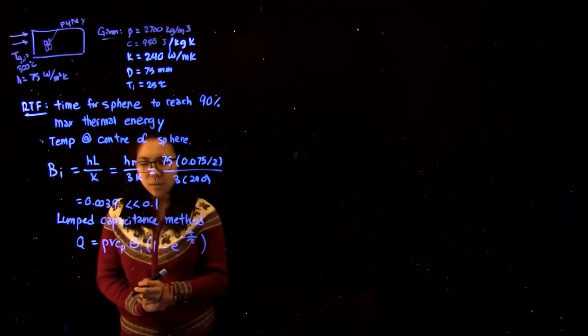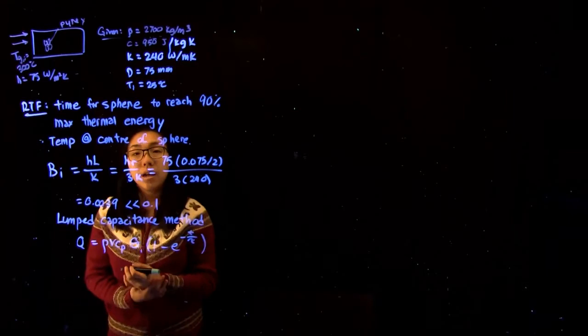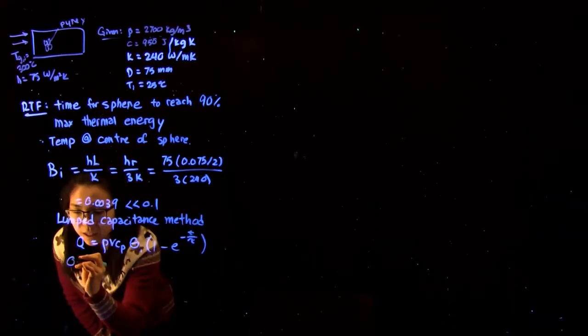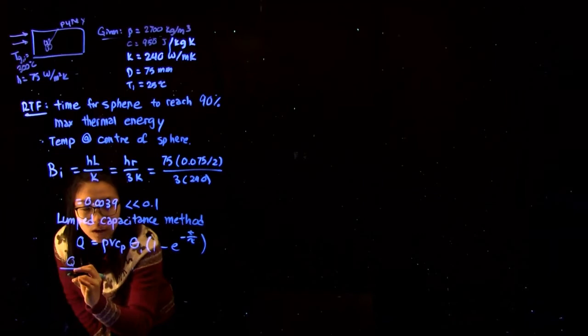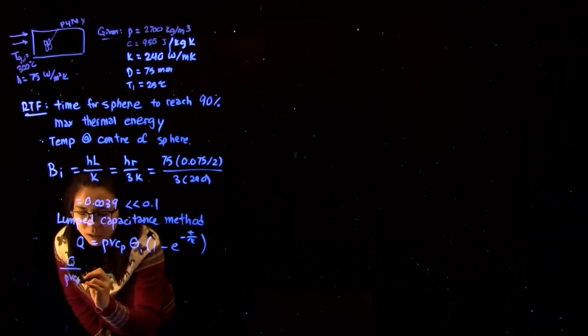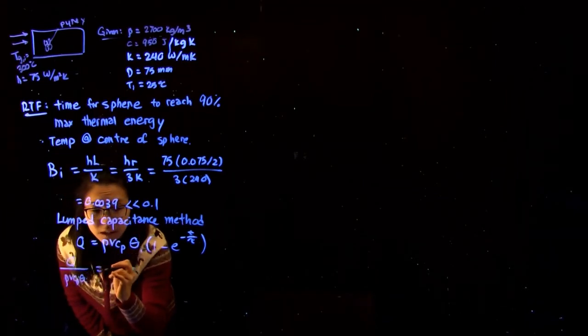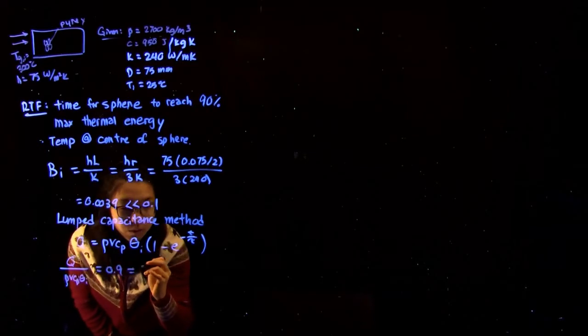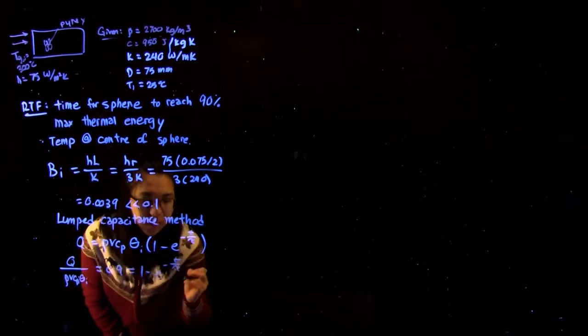And in this case, because we know we're transferring 90% of the thermal energy, we can rewrite this to say that Q over rho V Cp theta_i equals 0.9, which equals 1 minus e to the minus T over tau.